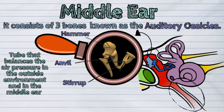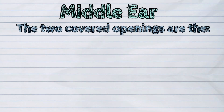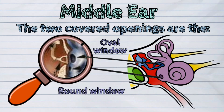There is a tube that balances the air pressure in the outside environment and in the middle ear. It's called the auditory tube or Eustachian tube. The two covered openings in the middle ear are the oval window and round window.